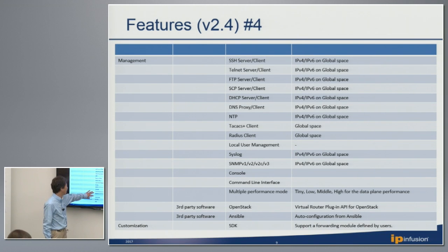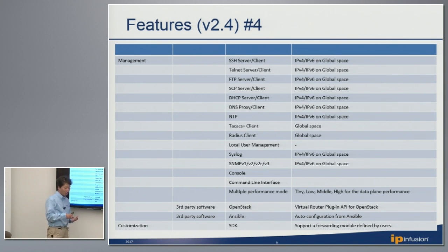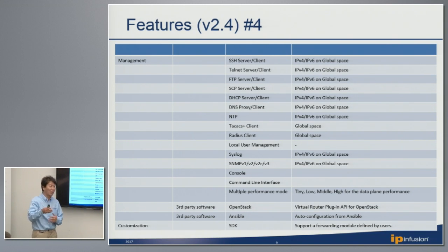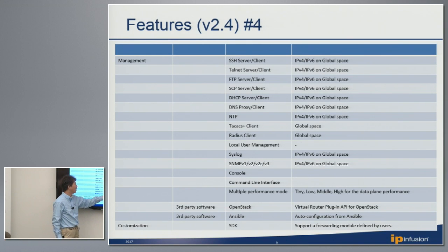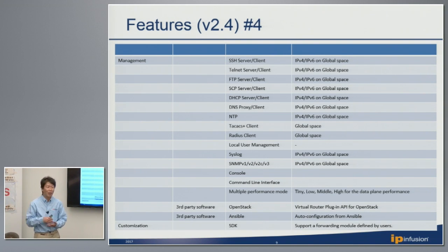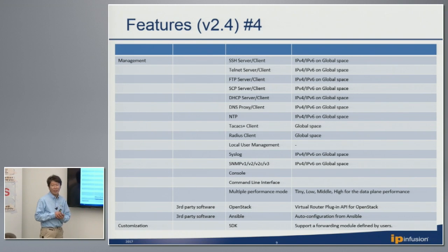Another feature is we support multiple performance modes with a single image — tiny, low, middle, and high performance modes. Sometimes customers don't need higher performance and are okay with less than 1, 2, or 3 Gbps. In that case, they can enable tiny mode from the CLI. In tiny mode, Barnos does not require much CPU or memory — it can run with one CPU and less than 1 GB of memory, making it easy to increase the number of instances on a single server.